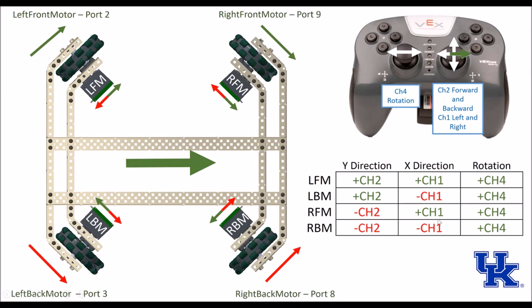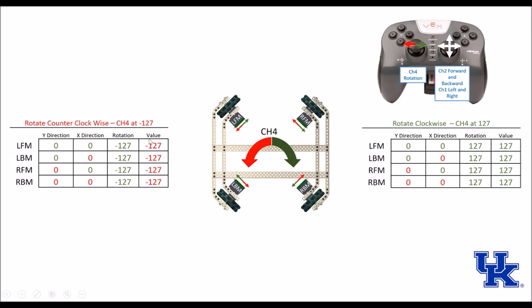When we try to rotate counterclockwise, we're going to set channel 4 to negative 127 — so we've toggled it all the way to the left. We write down that true value into the rotation. When we add all three together — 0 plus 0 plus negative 127 — we get a counterclockwise value of negative 127 for each motor, causing the robot to rotate counterclockwise.